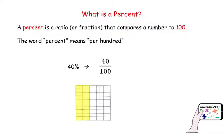So what is a percent? A percent is a ratio or a fraction that compares a number to 100. The word percent means per hundred. So that means that if, for example, we have 40%, this is equivalent to 40 over 100 or 40 hundredths.